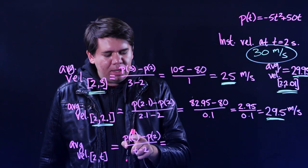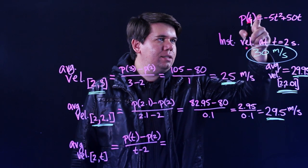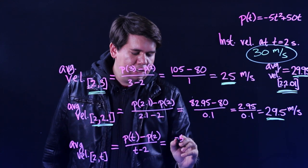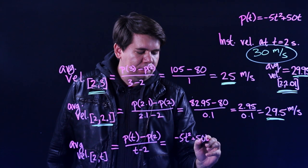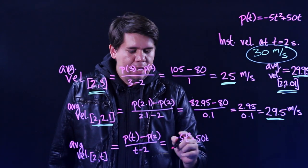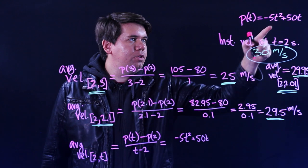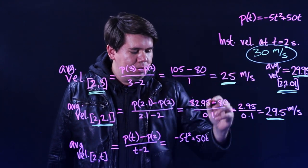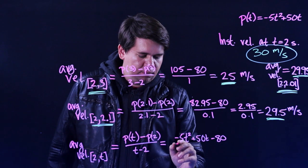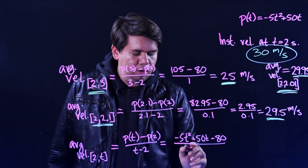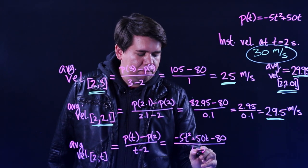What do we get? Just like before, we would do p of that time t, just a variable t, minus p of 2 all over the difference between t and 2. What does that give you? Well, what is p of t? p of t is just our expression. It's minus 5t squared plus 50t. And then there's a minus p of 2. And we said p of 2 is 80. When you plug 2 in, you get 80. So minus 80 from the minus p of 2.